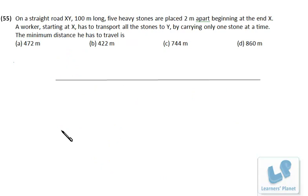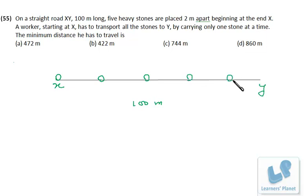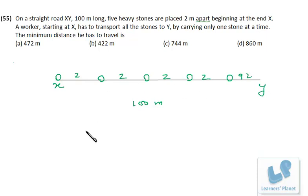Next problem: on a straight road XY 100 meters long, 5 heavy stones are placed 2 meters apart beginning at X. A worker starting at X has to transport all stones to Y carrying only one stone at a time. The minimum distance he has to travel: the first stone is at X (0m), then at 2m, 4m, 6m, 8m. The gaps from the stone positions to Y are 100, 98, 96, 94, and 92 meters respectively.